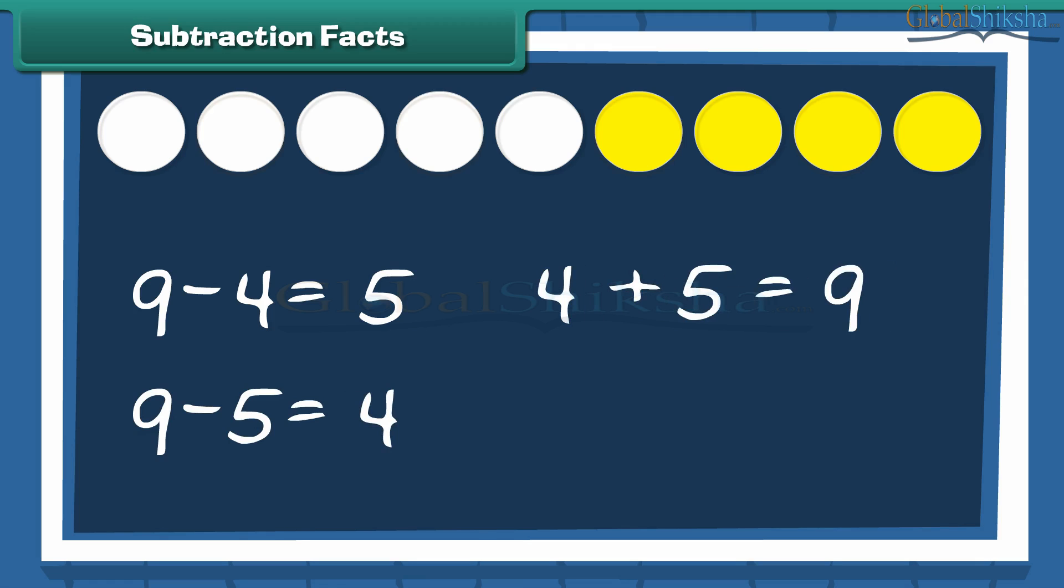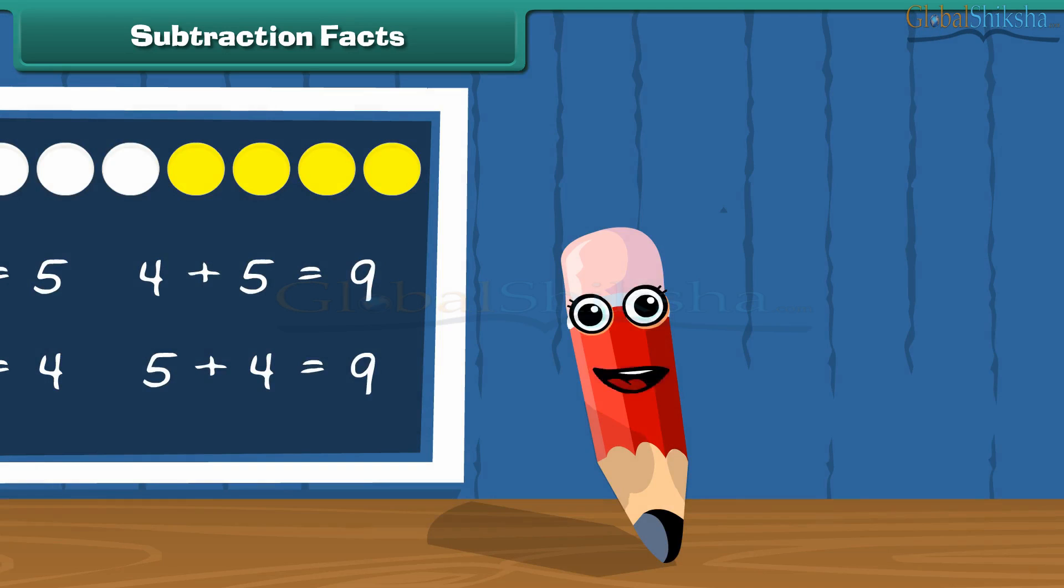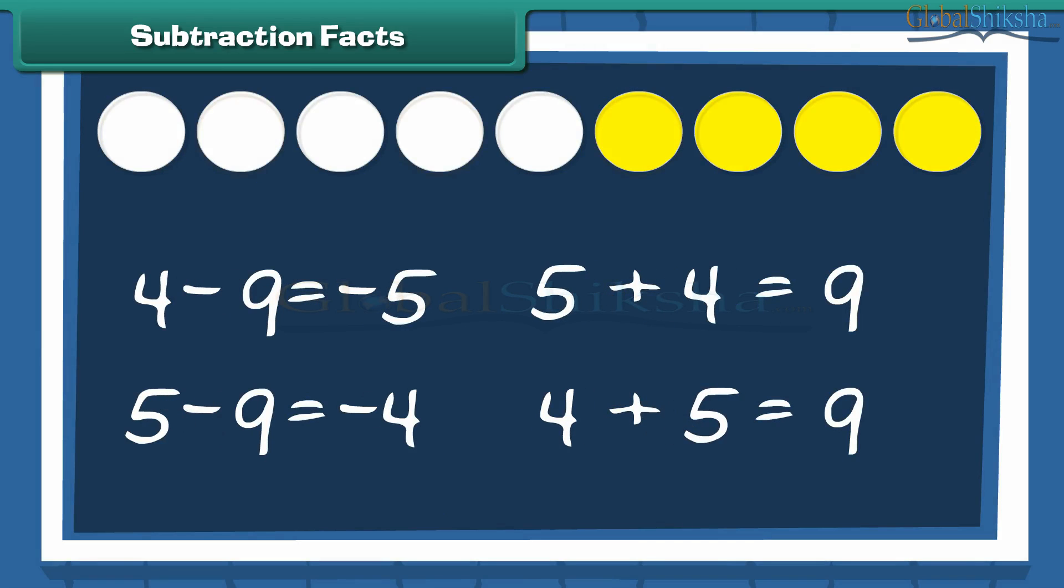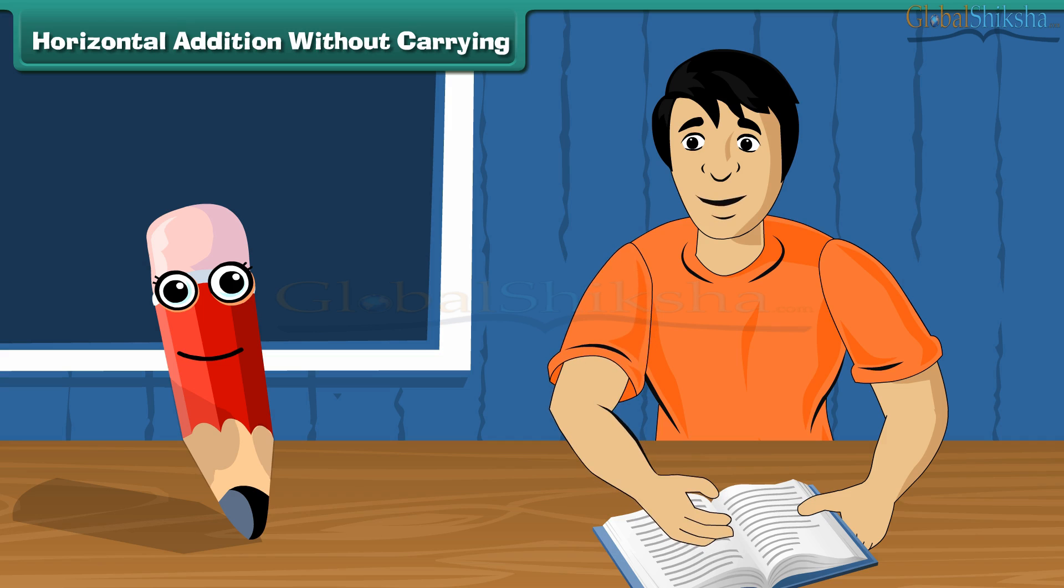Remember the addition fact we looked at a while ago? 4 plus 5 is equal to 9, and 5 plus 4 is equal to 9. Well, for every addition fact, there is a corresponding subtraction fact too. This shows that 3 numbers can be interchanged in addition or subtraction.